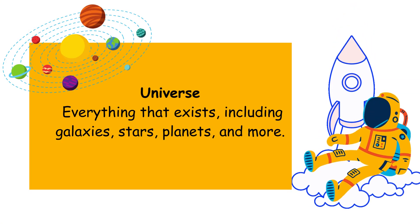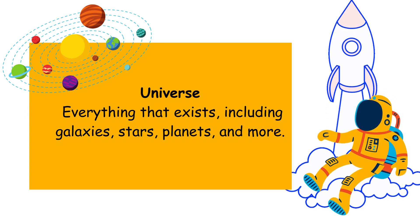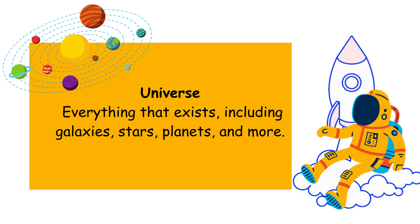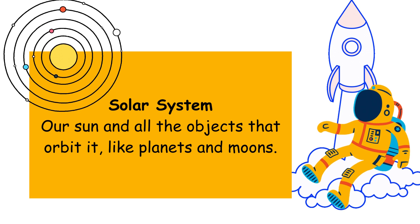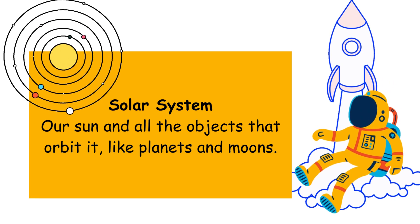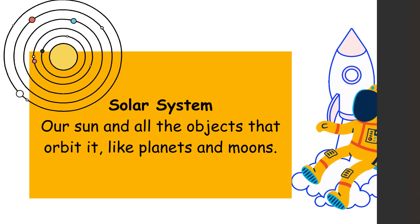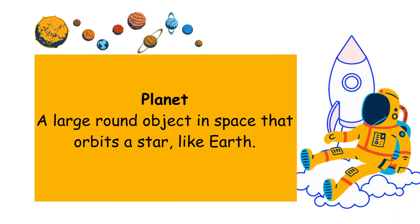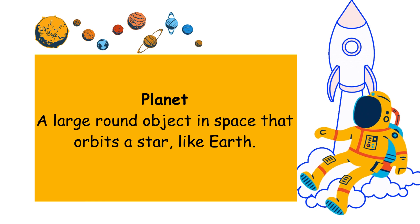Universe: everything that exists, including galaxies, stars, planets, and more. Solar system: our sun and all the objects that orbit it, like planets and moons. Planet: a large round object in space that orbits a star, like Earth.